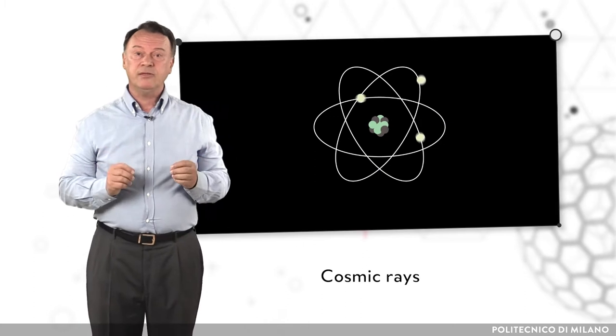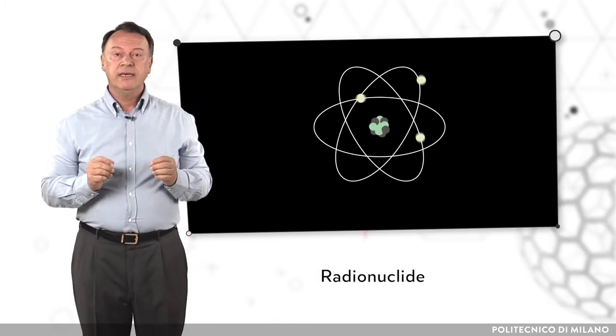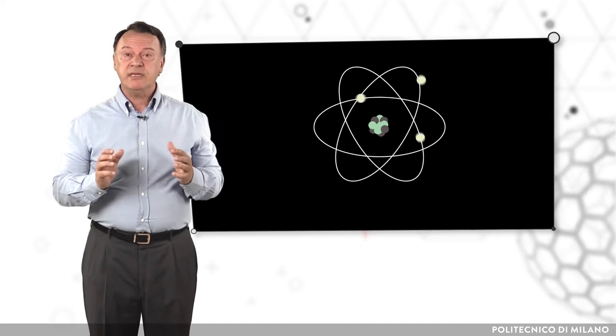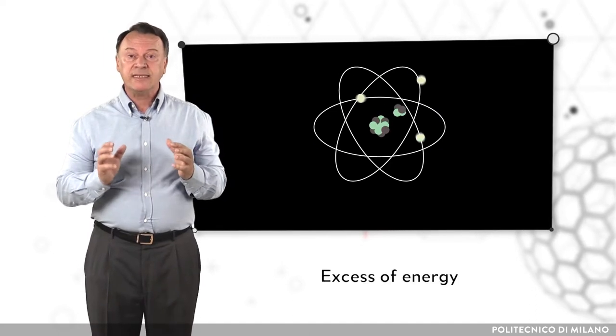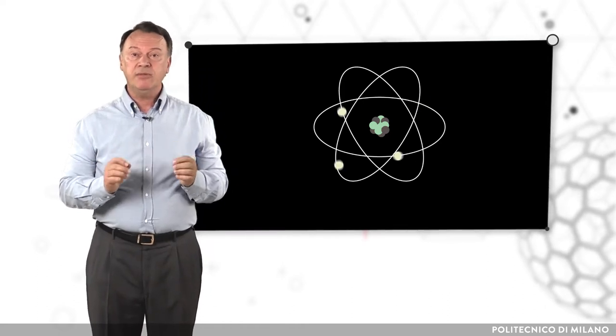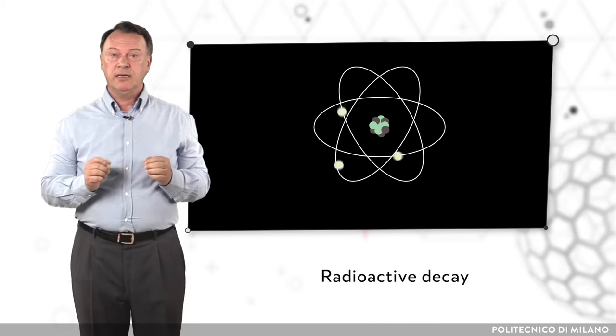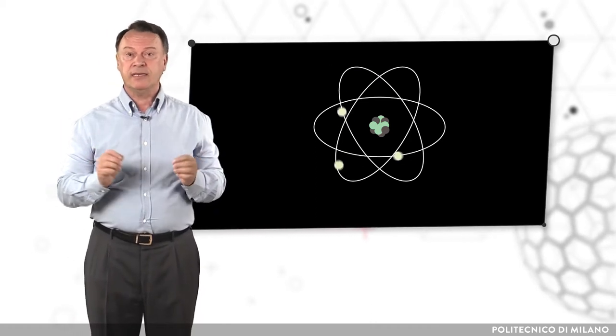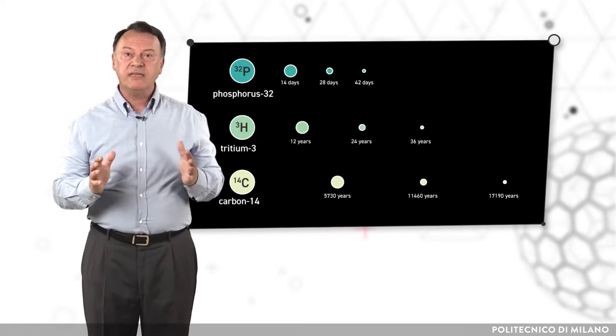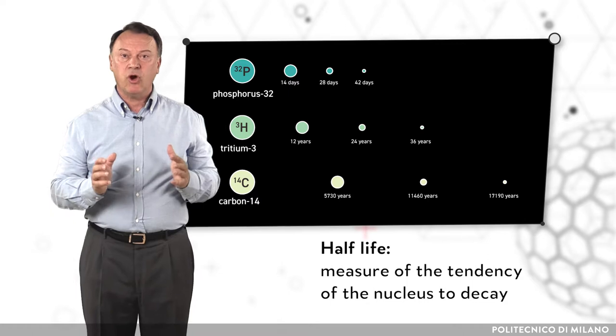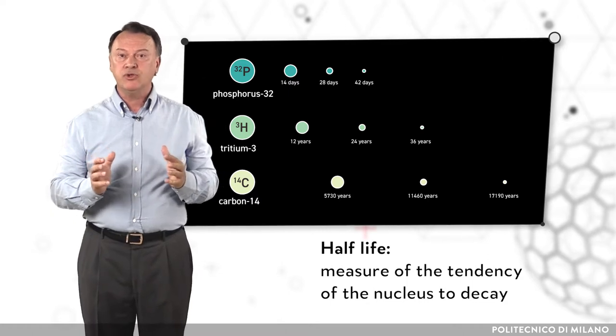A radioactive element, also named radionuclide, is an atom with an unstable nucleus. This means that the nucleus has an excess of energy that could be released by a process named radioactive decay. The atom could reach an unstable status or a final stable one. Each radioactive element is characterized by a half-life that is a measure of the tendency of the nucleus to decay.